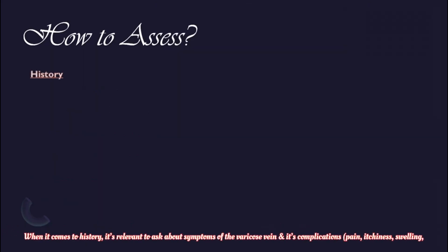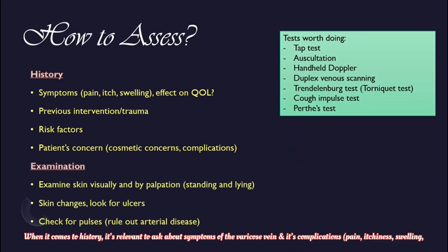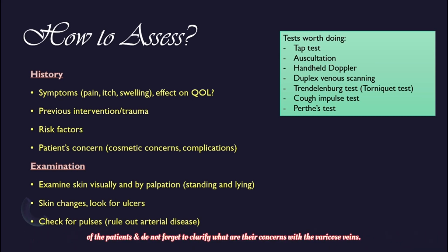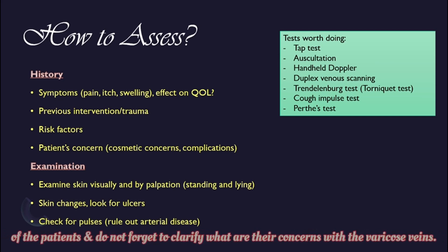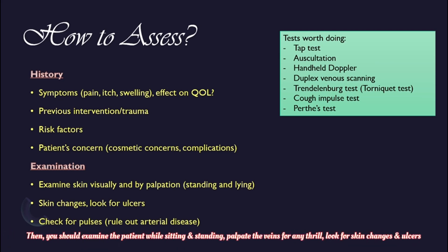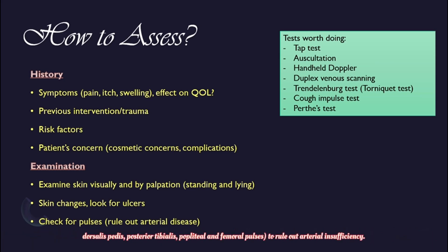When taking a history, it's relevant to ask about symptoms of varicose veins and their complications, such as pain, itchiness, swelling, and decreased range of movement. Ask if it's affecting their daily life and whether any surgery has been done on the veins or any trauma. Find out the risk factors and clarify the patient's concerns. Examine the patient while sitting and standing — palpate the veins for any thrill, look for skin changes and ulcers, document them, and check peripheral pulses especially lower leg ones like dorsalis pedis, posterior tibialis, popliteal, and femoral pulses to rule out arterial insufficiency.